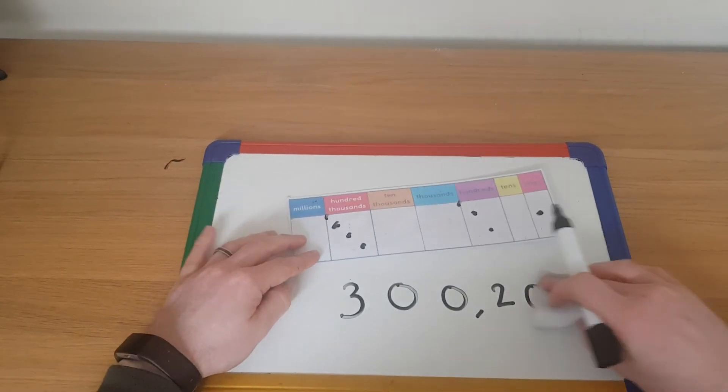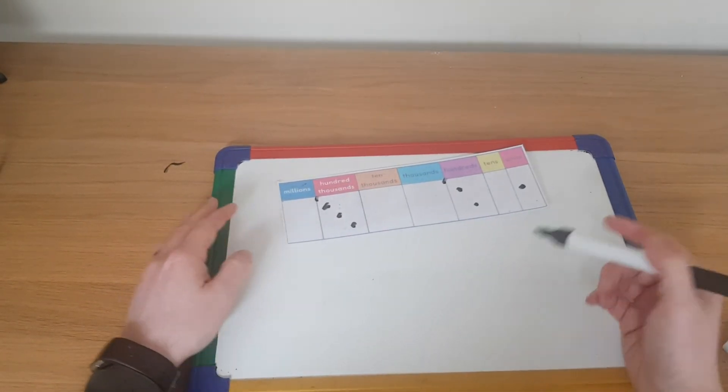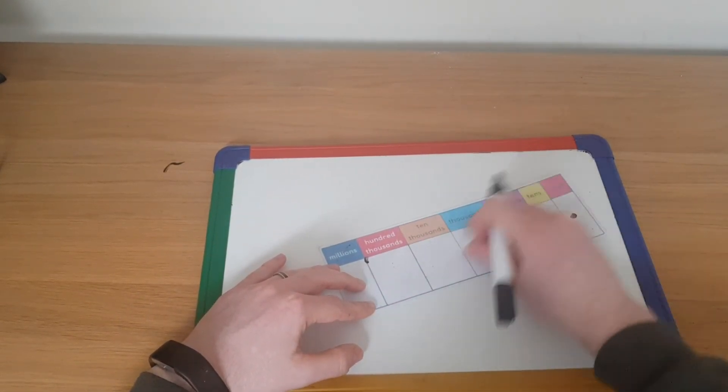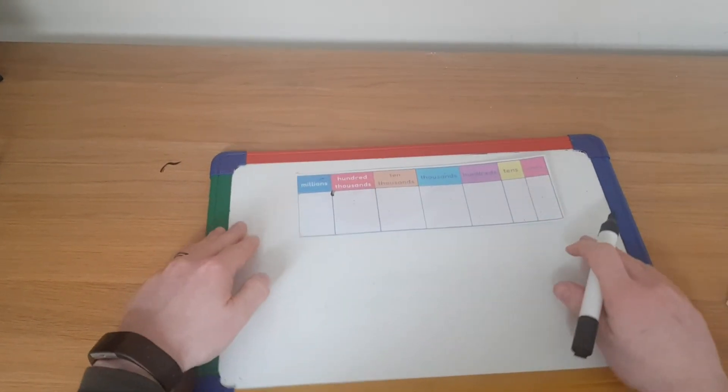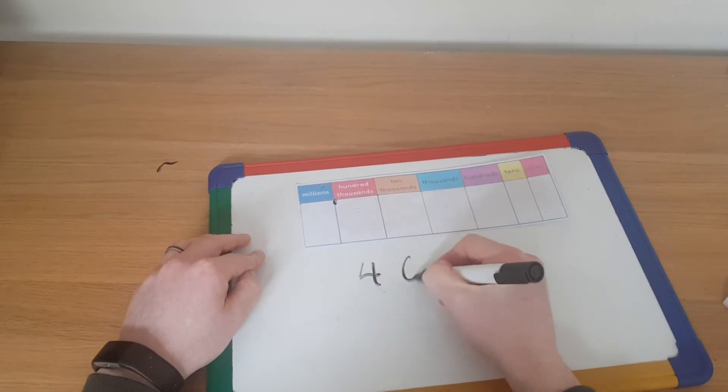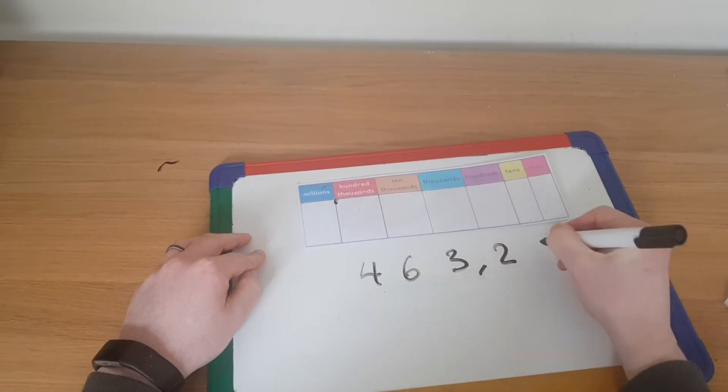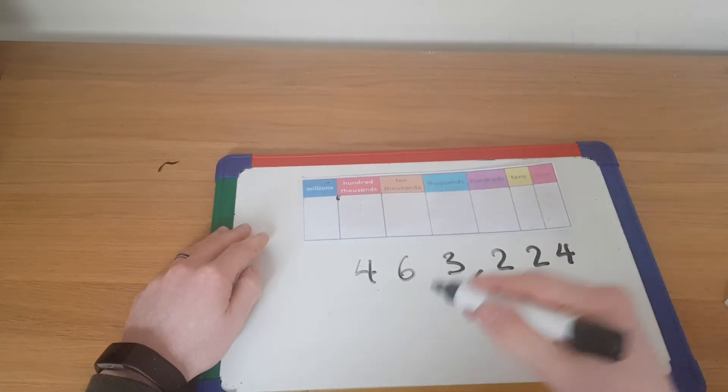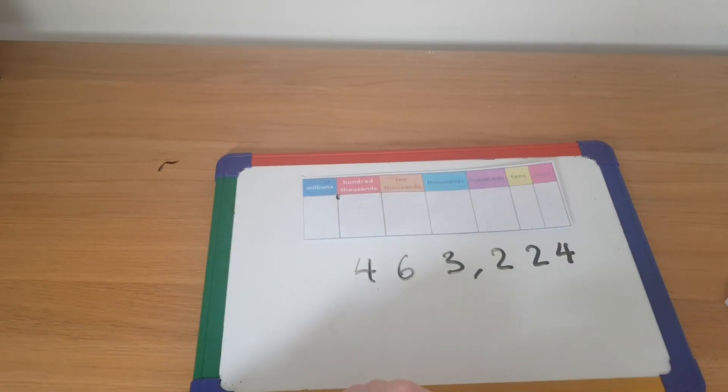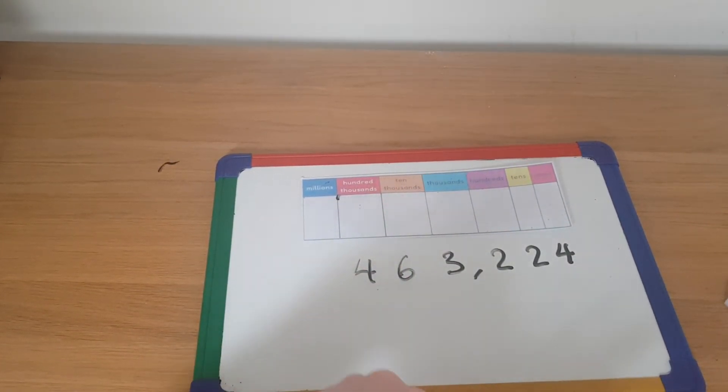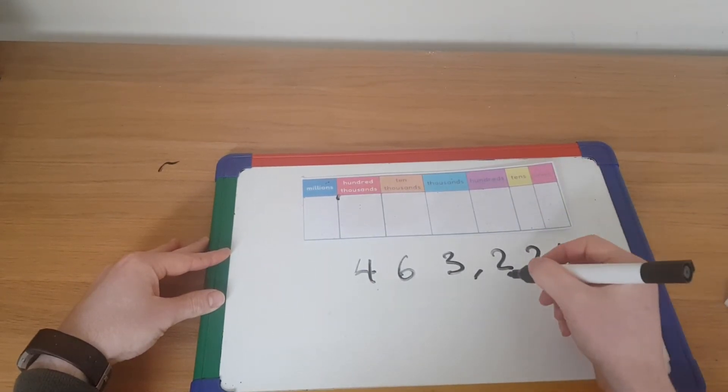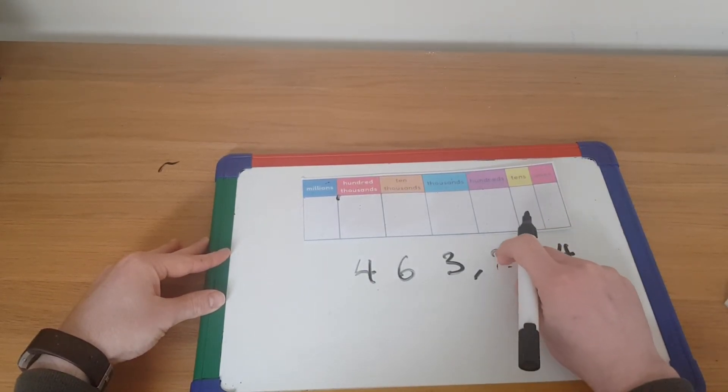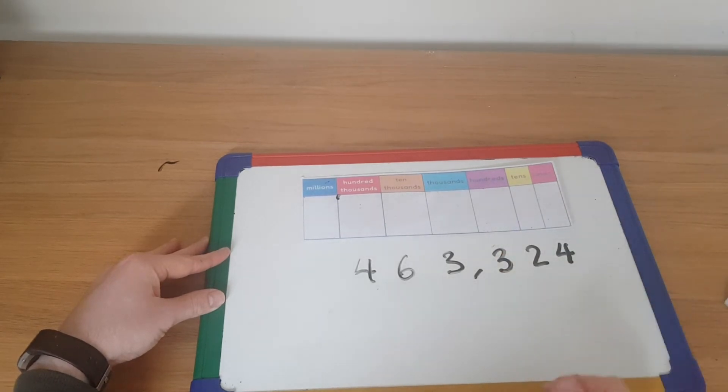So let's put all this sort of review and knowledge in action then. If I then had this number, 463,224, it's an even number, because I've ended with an even numeral. So you've got that number down on your piece of paper. Now, I want you to add a hundred more for me. What number have you ended up with? So you should have looked at your hundreds column and added one more in there. So I've now got, instead of two hundreds, I've got three hundreds.